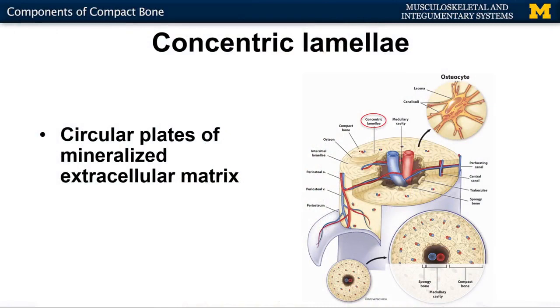Now, if you look at a single osteon, let's talk about the components within that structural unit. You're going to have concentric lamellae — that is the actual ring portions of the osteon. These are just the mineralized, or hardened, extracellular matrix. Dotted within that concentric lamellae, you're going to have the mature bone cells, or the osteocytes.